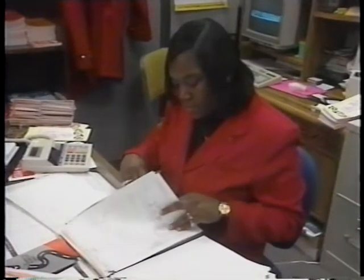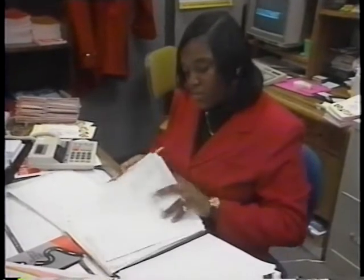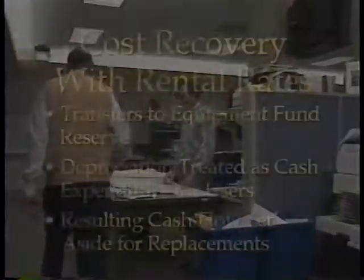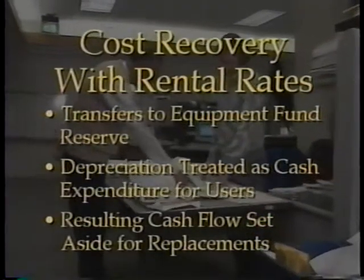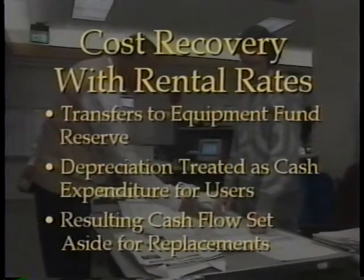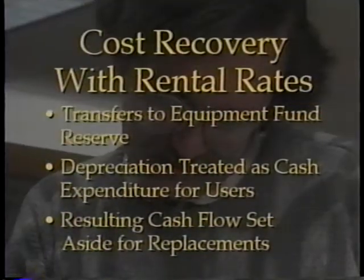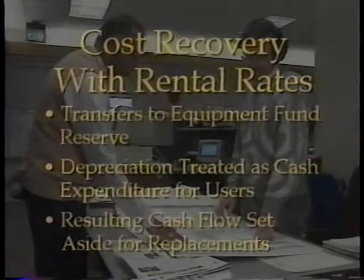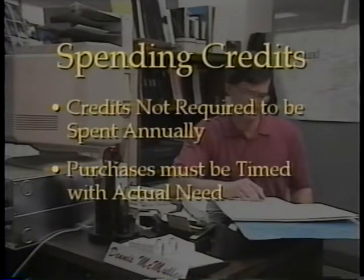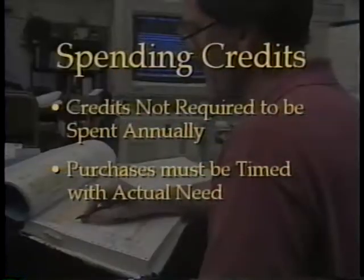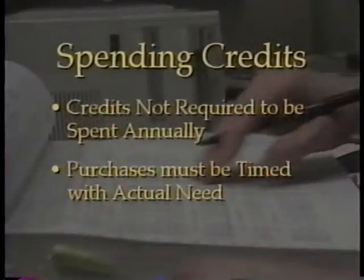Under the Equipment Replacement Fund concept, all replacement costs would be recovered from equipment users through the rental rate system. Using rental rates to recover these costs involves transferring funds from user budgets to an equipment fund reserve account. Depreciation would thus be treated as a cash expenditure for the user, and the cash flow resulting from depreciation charges would be set aside for the eventual purchase of replacement equipment. Funds credited to the equipment fund should not be required to be spent in their entirety by the end of the budget period, as this would defeat the fund's purpose in giving the fleet manager flexibility to time purchases with manufacturing cycles.